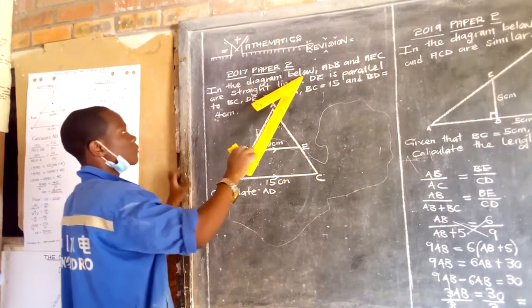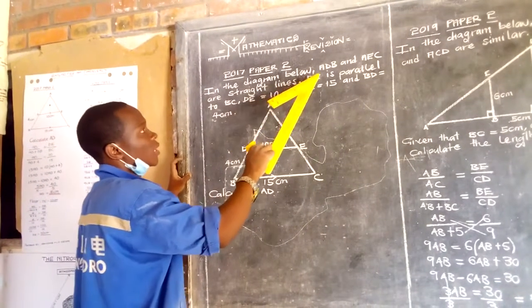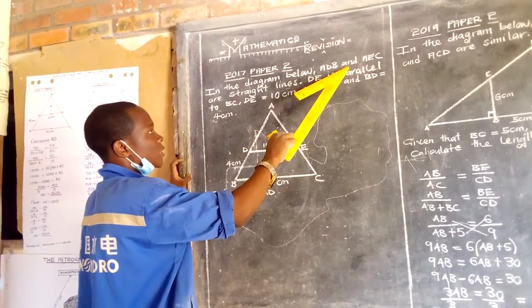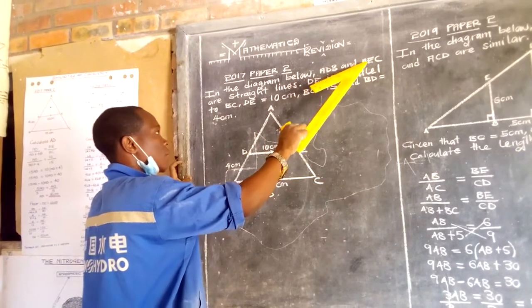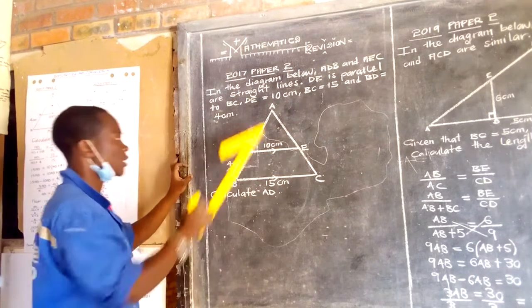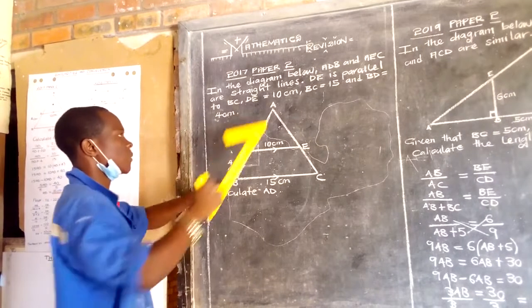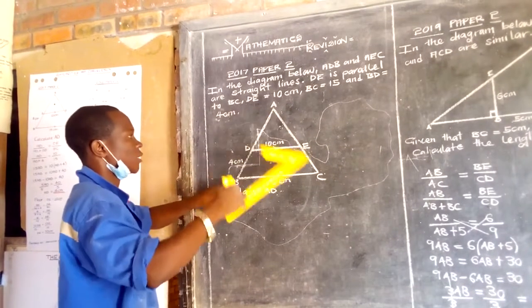In the diagram below, the lines ADB and AEC are straight lines. ADB and AEC, these two are parallel.